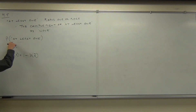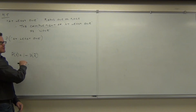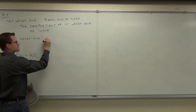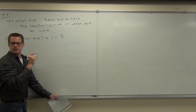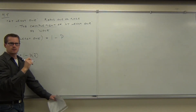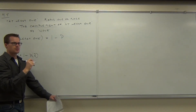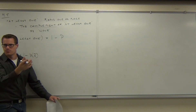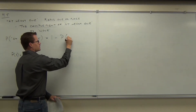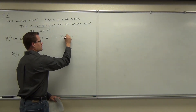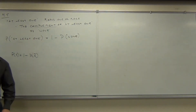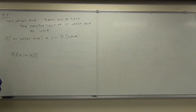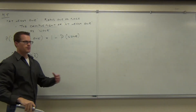If my event is 'at least one,' we're talking about at least one of something. What was the complement of 'at least one' again? None. The probability of at least one is one minus the probability of none — or the probability of having none of whatever you're talking about.